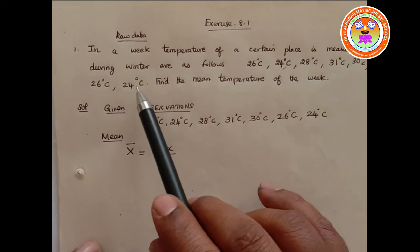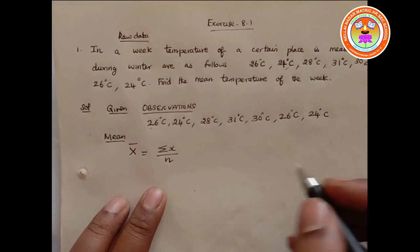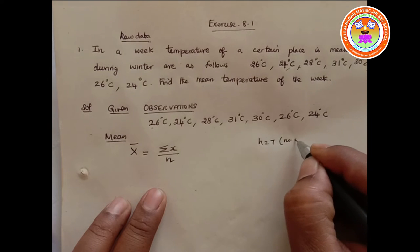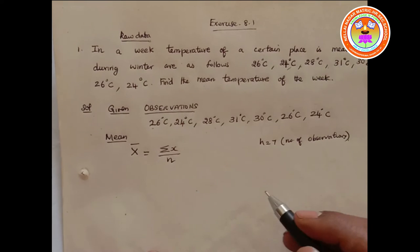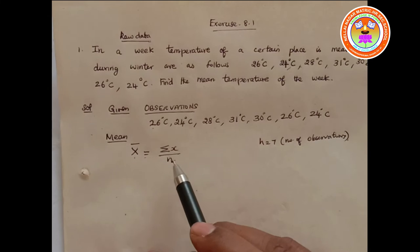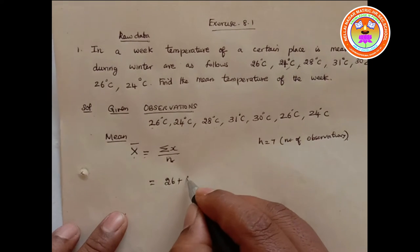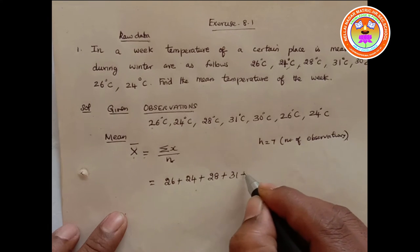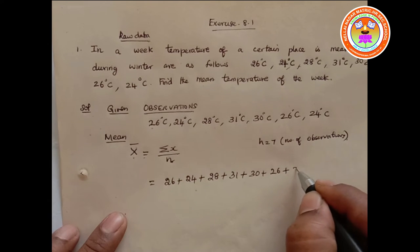Counting the observations: 1, 2, 3, 4, 5, 6, 7. So n = 7, that is the number of observations. The mean formula is x̄ = Σx / n. Sum of x = 26 + 24 + 28 + 31 + 30 + 26 + 24 degrees Celsius, divided by n = 7.